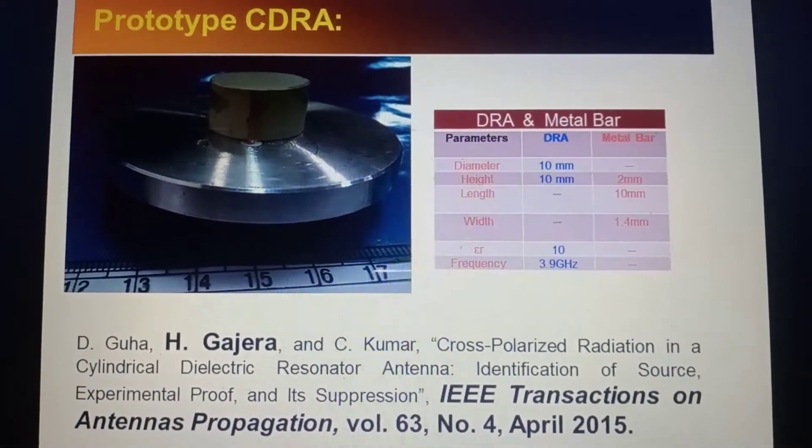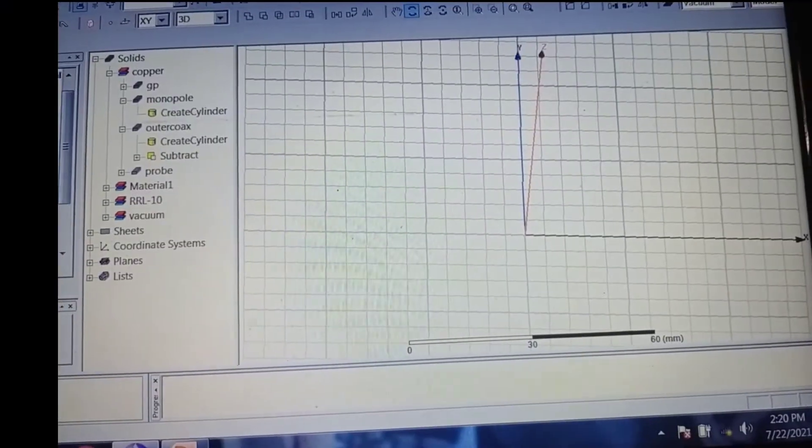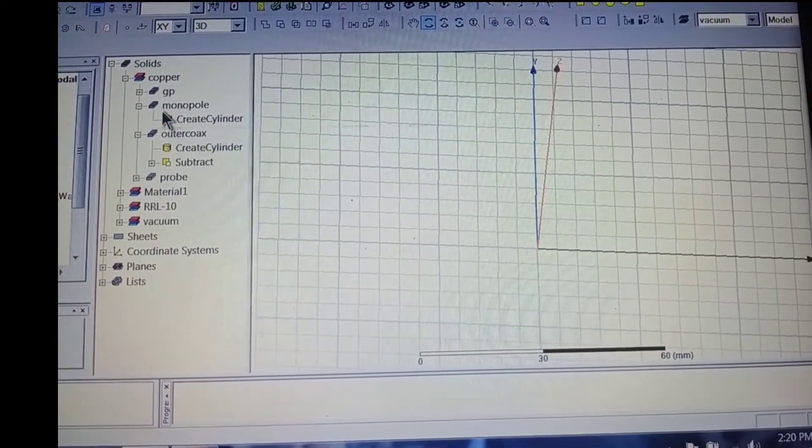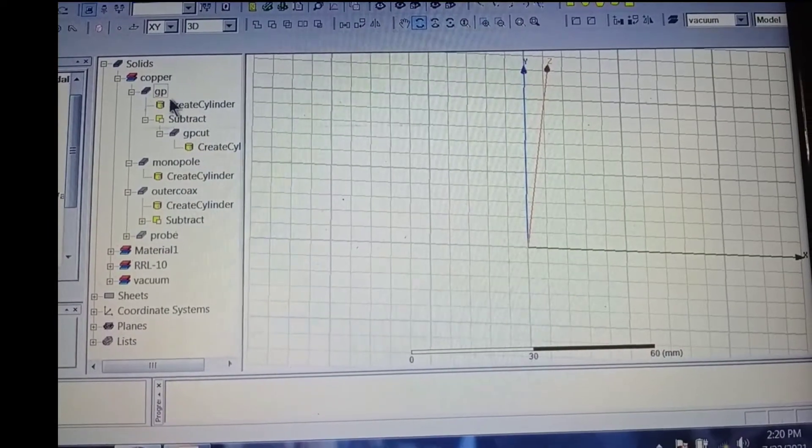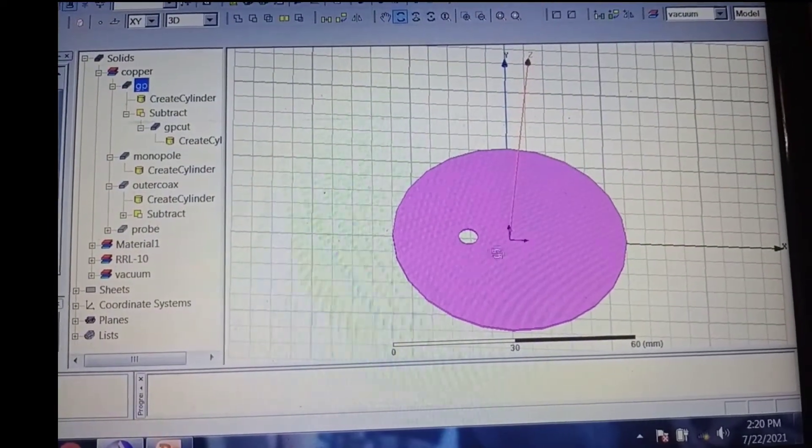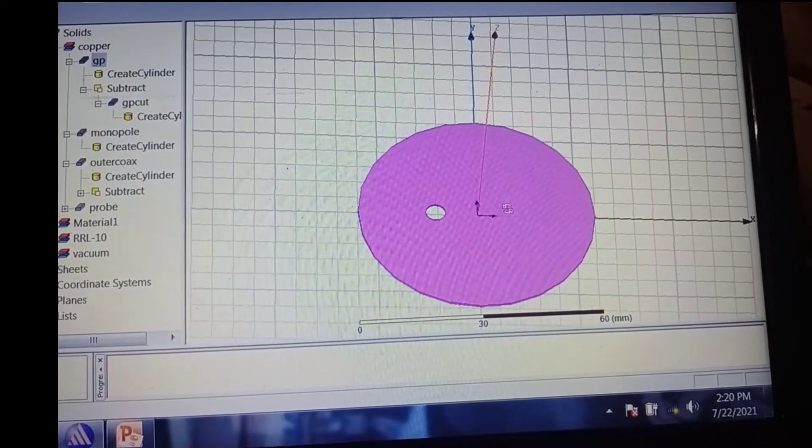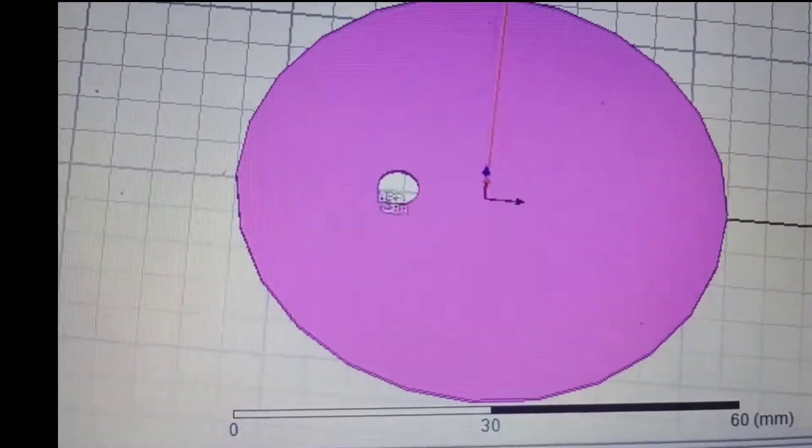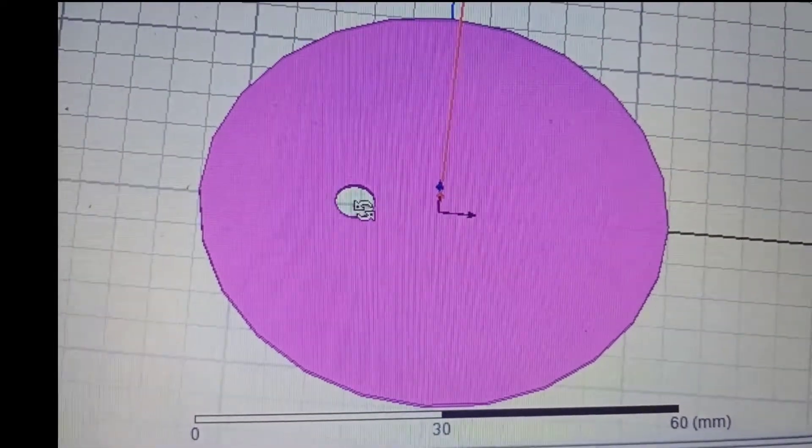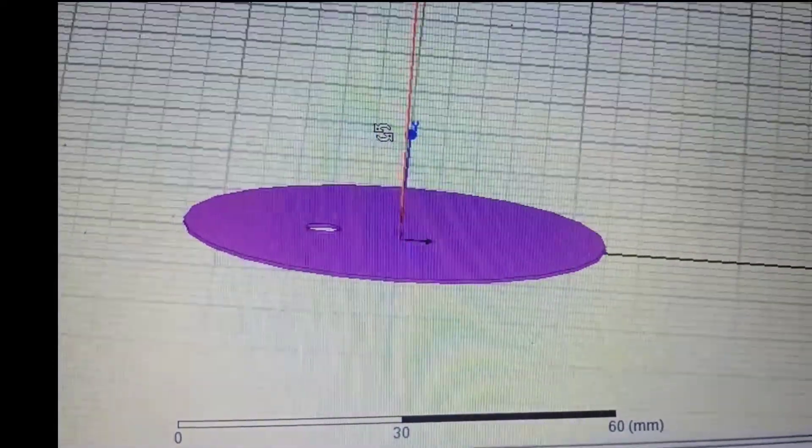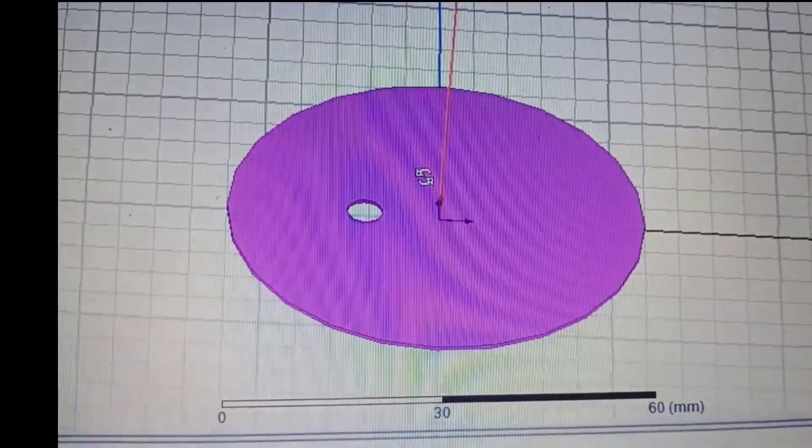Let us demonstrate the same in HFSS. Let us consider the ground plane. I am here considering this ground plane with a radius of 30 mm, and I have made one hole to place the coaxial probe. Its dimension is 2.5 mm. Above this, I am going to place the DRA.